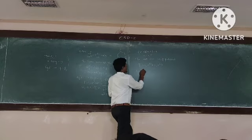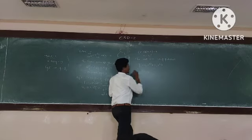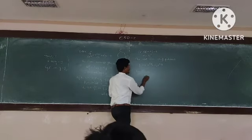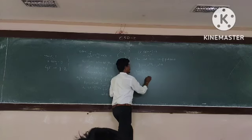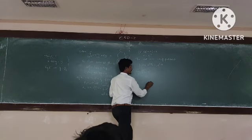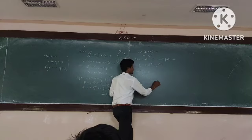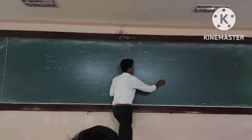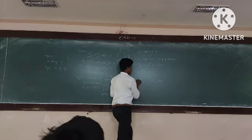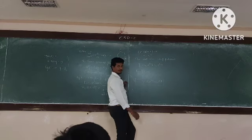The general solution is y equal to yc. That is y equal to c1 e power 3x plus c2 e power 5x. This is the solution of the given equation.